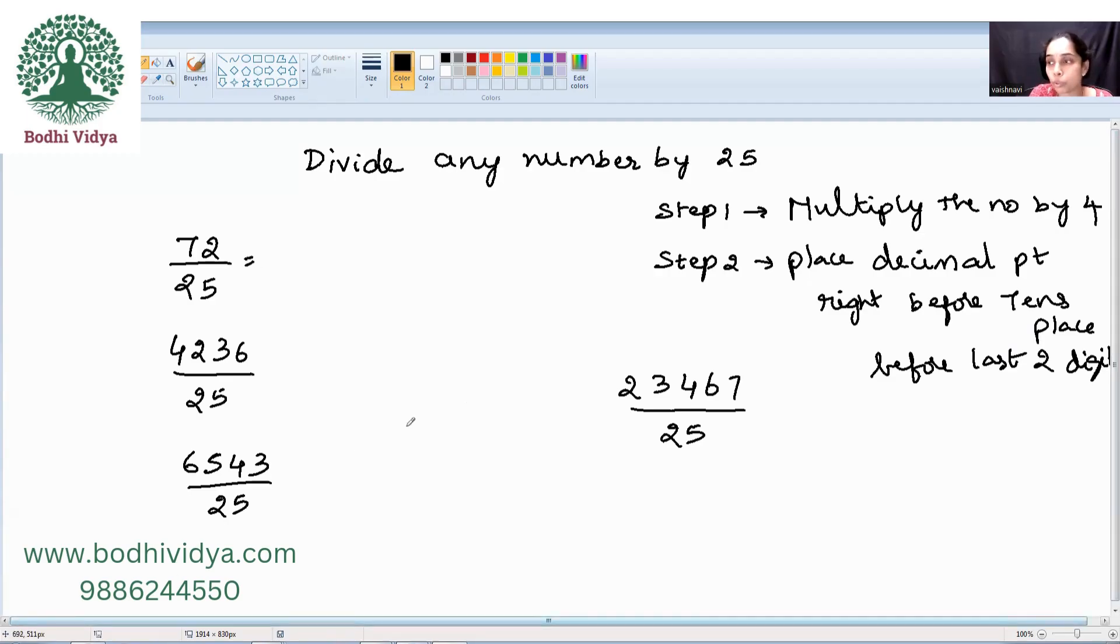Now, first what am I supposed to do? I need to multiply by 4. So, 4 times 7 is 28 and 4 times 2 is 8. Now, I need to place a decimal point right before the last two digits. These are the last two digits. I will place it here. So, your answer is 2.88.